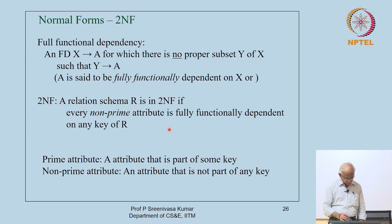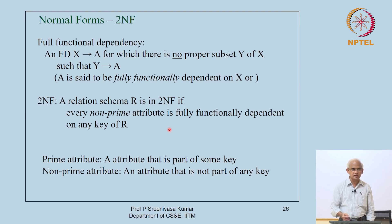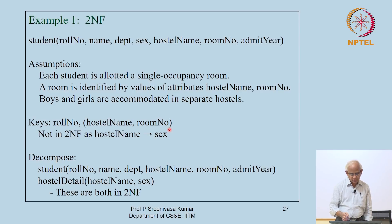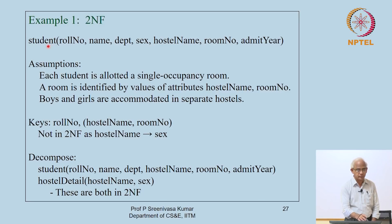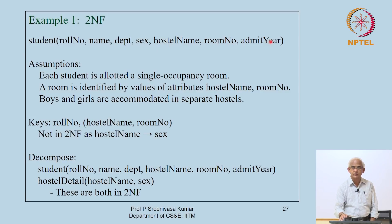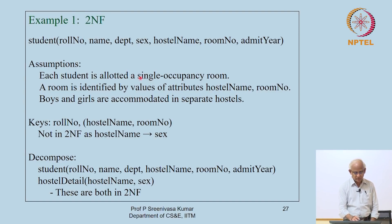Let us look at an example. The student relation has attributes: roll number, name, department, sex, hostel name, room number, and admit year. The assumptions are: each student is allotted a single-occupancy room, each room is identified by hostel name and room number, and boys and girls are accommodated in separate hostels.